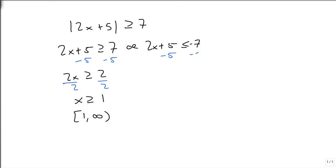For our other side, we're still going to subtract 5 as our first step. But now we get 2x is less than or equal to minus 12. We still divide by 2, and we get x is less than or equal to minus 6, or minus infinity to minus 6 with a square bracket.